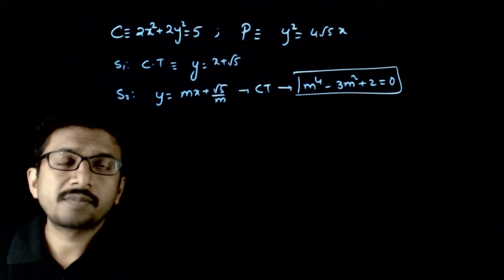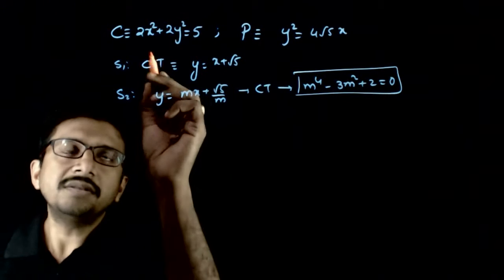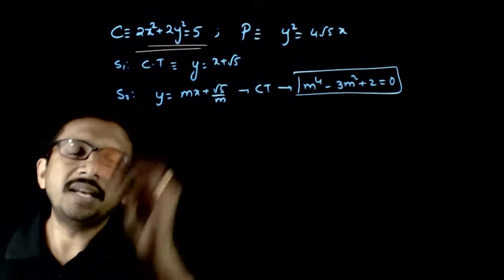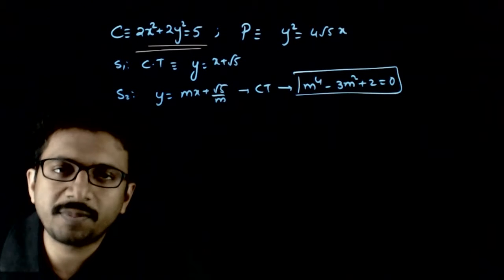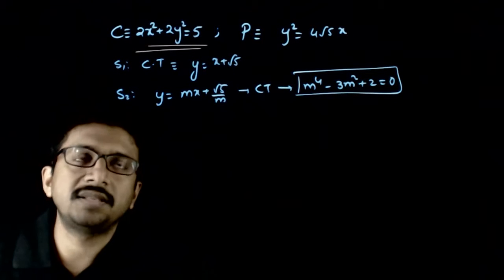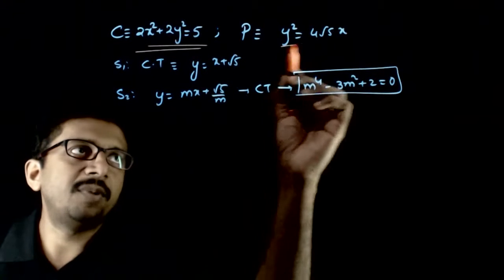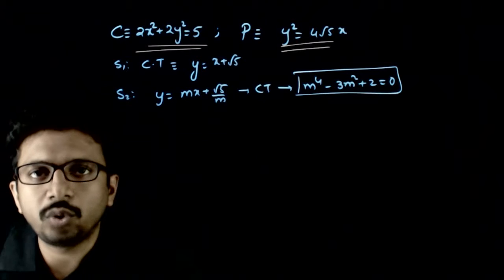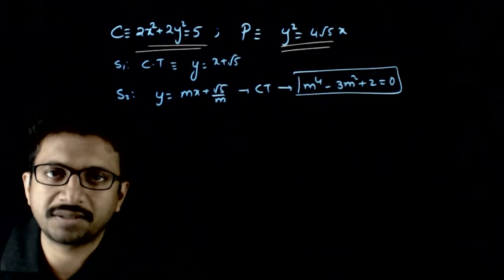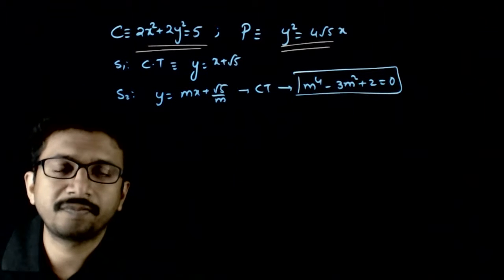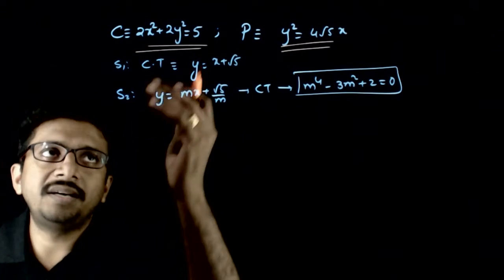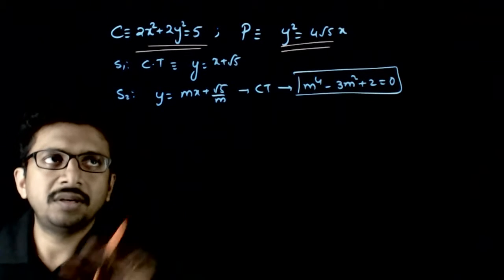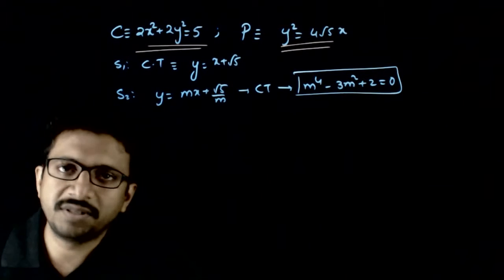Welcome students. In this question, we are given a circle 2x² + 2y² = 5 and a parabola y² = 4√5·x. With respect to the circle and the parabola, we are given two statements.